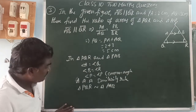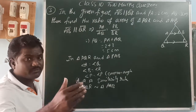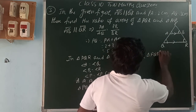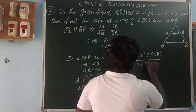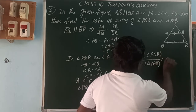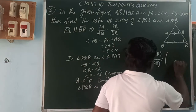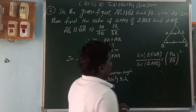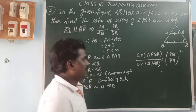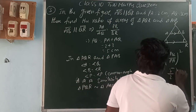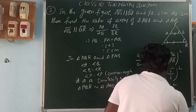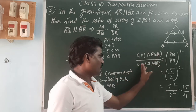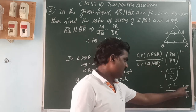Since triangle PQR is similar to triangle PAB, the ratio of their areas equals the square of the ratio of their corresponding sides. So area of △PQR / area of △PAB = (PQ/PA)² = (5/2)² = 25/4. Therefore the ratio of area of triangle PQR to area of triangle PAB is 25:4.